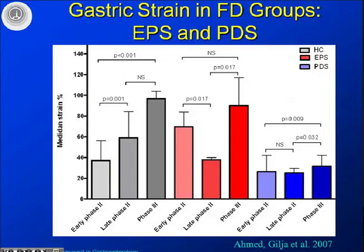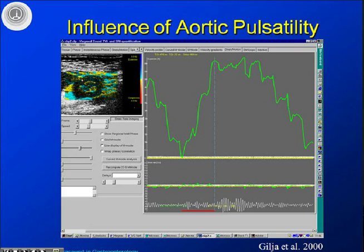When using endoscopic ultrasound, for instance, we are not always able to press with the transducer. But we can use the aortic pulsatility — which is a kind of abdominal hammer always banging inside our body — and see how that influences the tissues we are studying. This shows how the aorta actually influences the strain rate curves: all these spikes are how the aorta influences the GI wall.